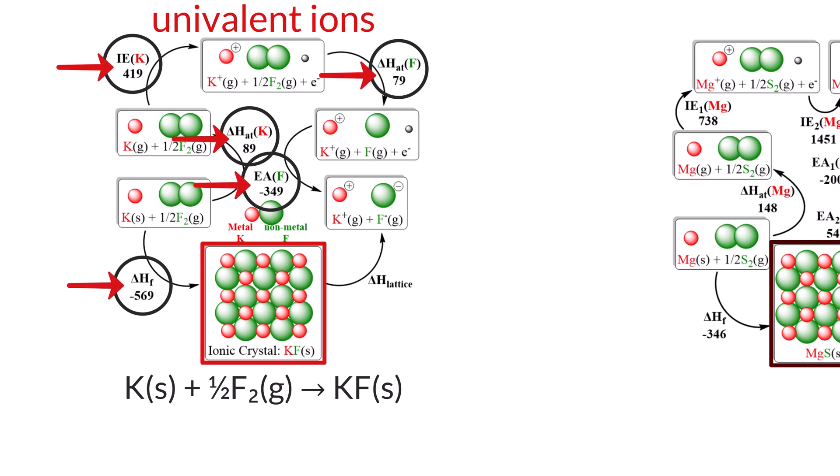Next, using the equation delta H sub lattice equals negative delta H sub F plus delta H sub AT of potassium plus delta H sub AT of fluorine plus the ionization energies plus the electron affinities, we substitute the given values where delta H sub lattice equals negative negative 569 making it positive plus 89 plus 79 plus 419 minus 349 equals 807 kJ per mole. Thus, the lattice energy for potassium fluoride is 807 kJ per mole.